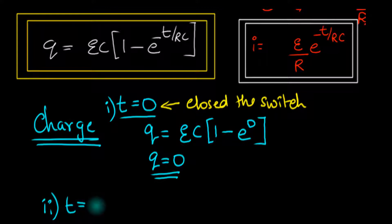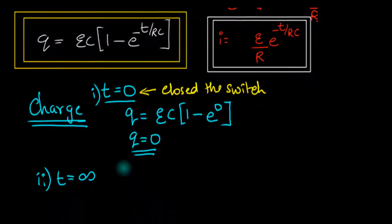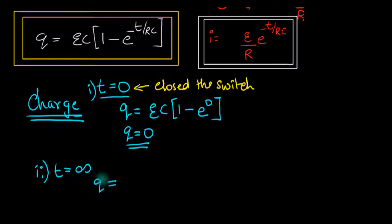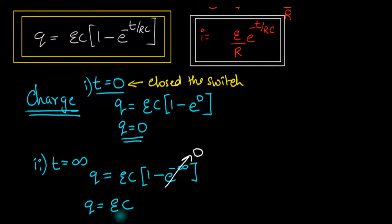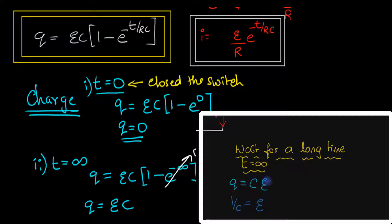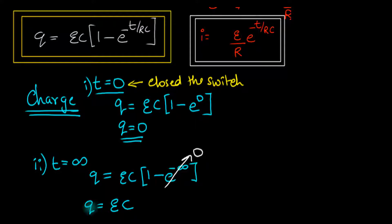Let's consider another case — t equal to infinity. The charge Q is going to be EC times 1 minus e to the power minus infinity. And e to the power minus infinity is just 0, so this term goes to 0. That tells us the charge at t equals infinity is just going to be E times C, which is the maximum charge. This is also something we predicted in the first video. So you see, this equation produces the same result and now tells us the value of Q everywhere in between.